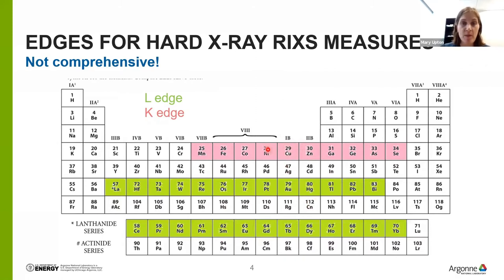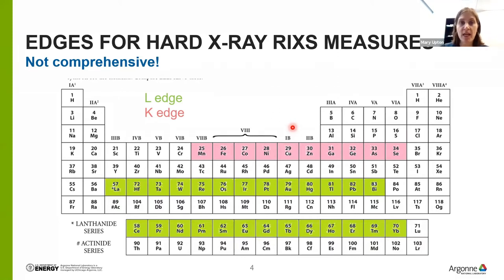For example, 99% of copper experiments are performed at the L edge. But if you wanted to use a higher photon energy — say, to look at a diamond anvil cell or have a larger range in reciprocal space — that would be a reason to measure the K edge, which is higher energy.